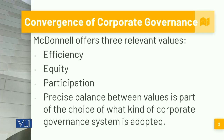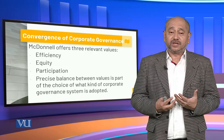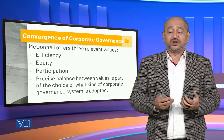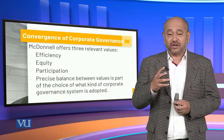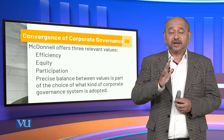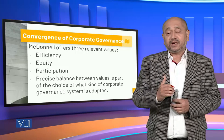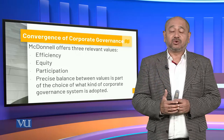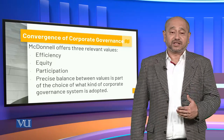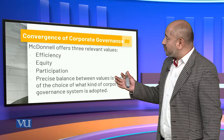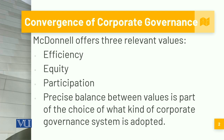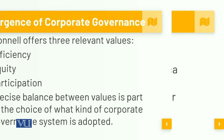McDonald looks at three relevant values: efficiency, equity, and participation. All stakeholders involved with corporate governance should focus on these three core values — how to make the organization more efficient, enhancing productivity and profits; how to make equitable decisions benefiting all stakeholders; and ensuring a participative approach. The balance between these values determines what kind of corporate governance system is adopted. This is essentially McDonald's model of convergence of corporate governance.